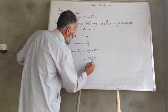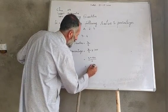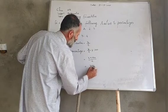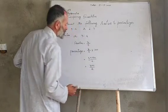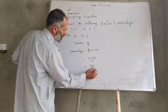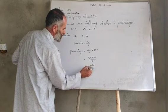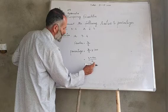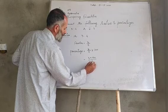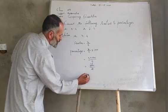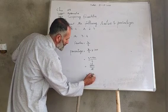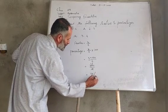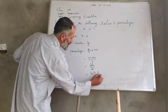3 into 100 gives us 300 divided by 4. Let's do the division: 4 into 3 goes 0, 4 into 30 goes 7 times which is 28, 4 into 20 goes 5 times. So this equals 75%, and that's our answer.